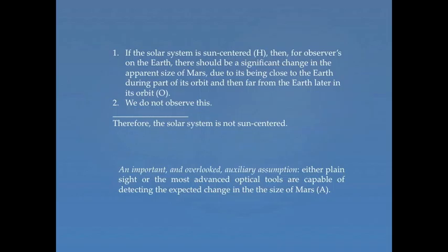So let H represent the sun-centered hypothesis. Let O be the prediction that we should see an apparent change in the size of Mars. And let V be this auxiliary assumption that I introduced at the bottom. So it was thought that H predicts O, O isn't the case, so H must not be the case. The problem is that V was being overlooked.